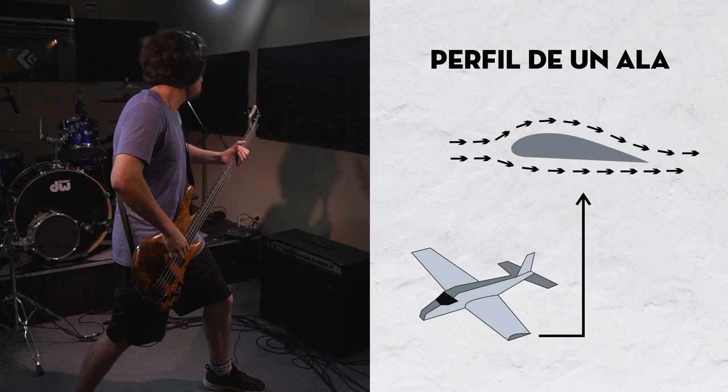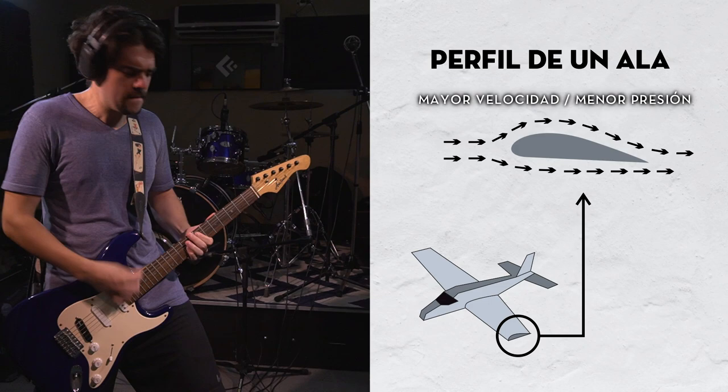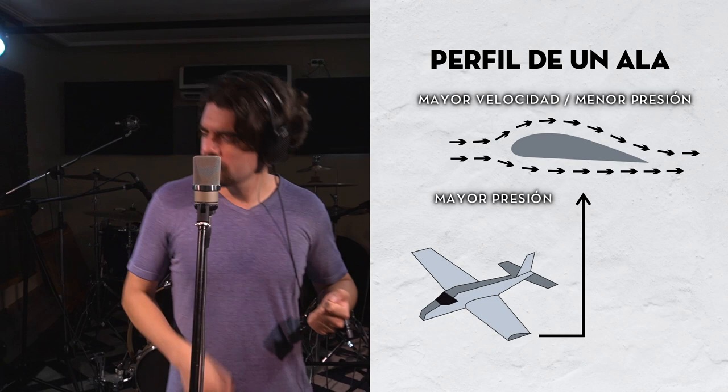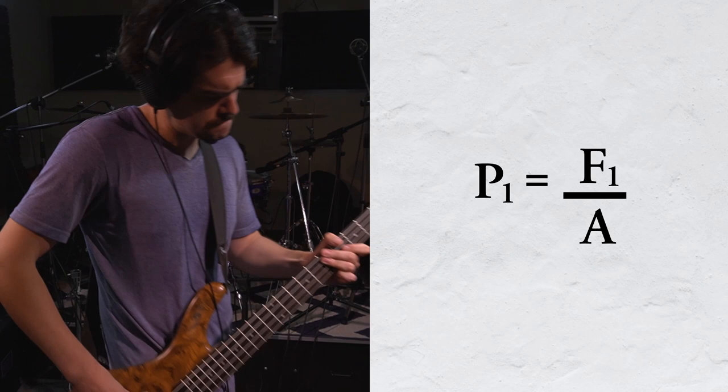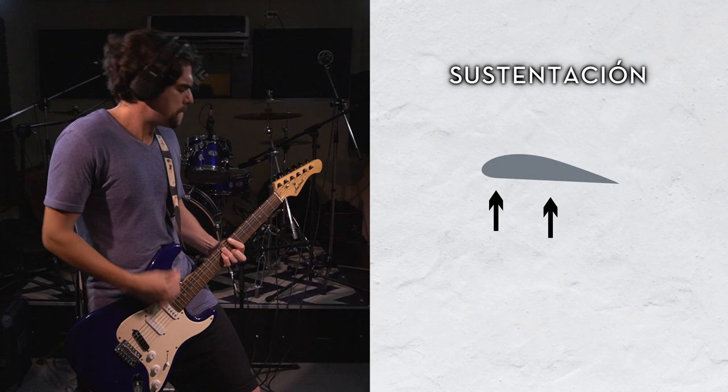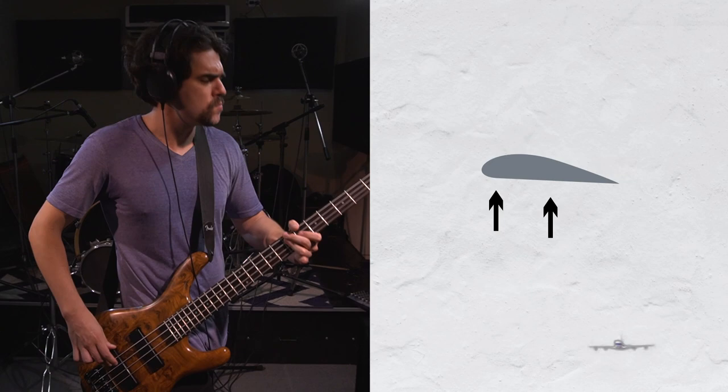Por lo tanto, en esta parte habrá mayor velocidad y, según Bernoulli, menor presión. Esto trae como consecuencia que en la parte de abajo del ala la presión sea mayor a la presión de la parte superior. Como la presión es fuerza sobre área, se produce una fuerza neta hacia arriba llamada sustentación, que es la fuerza que empuja al avión hacia arriba y permite que el avión vuele.